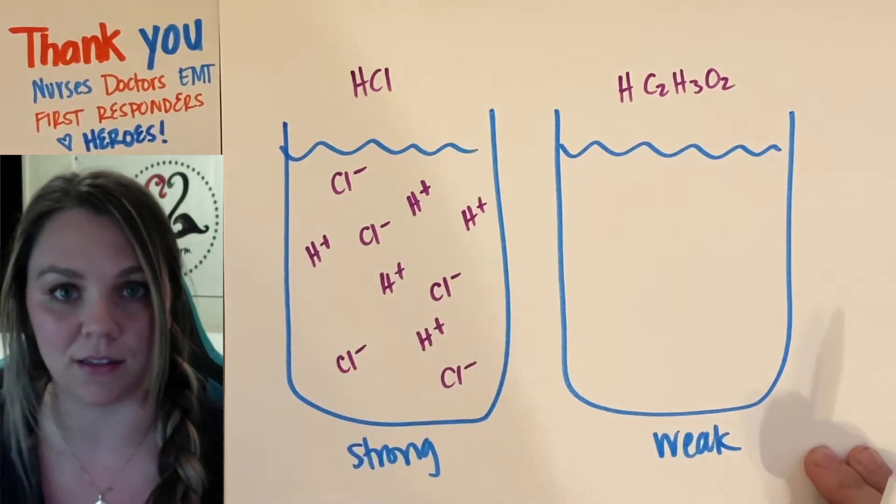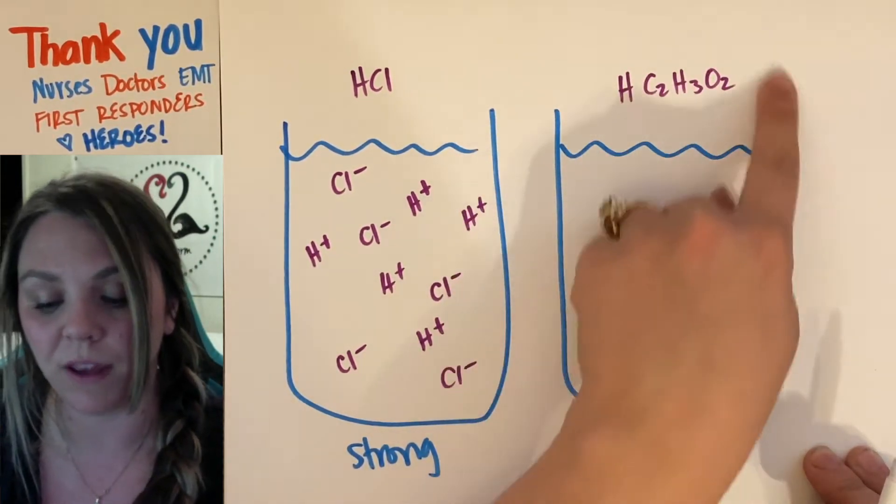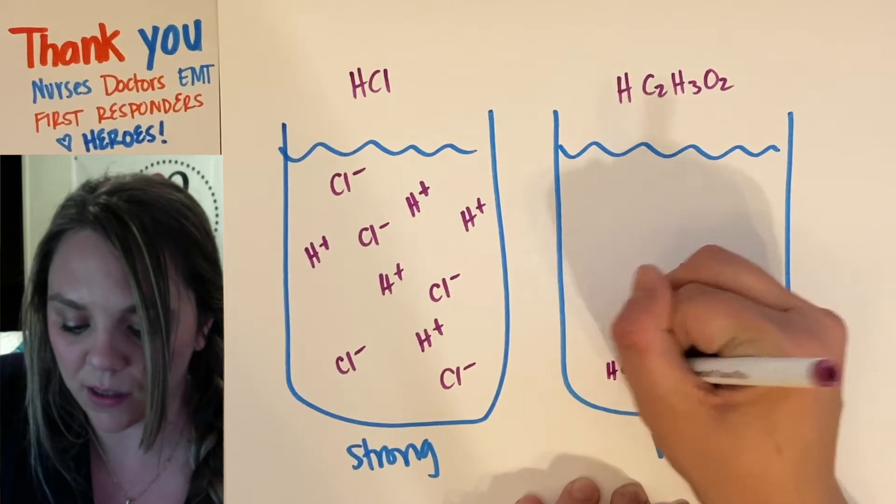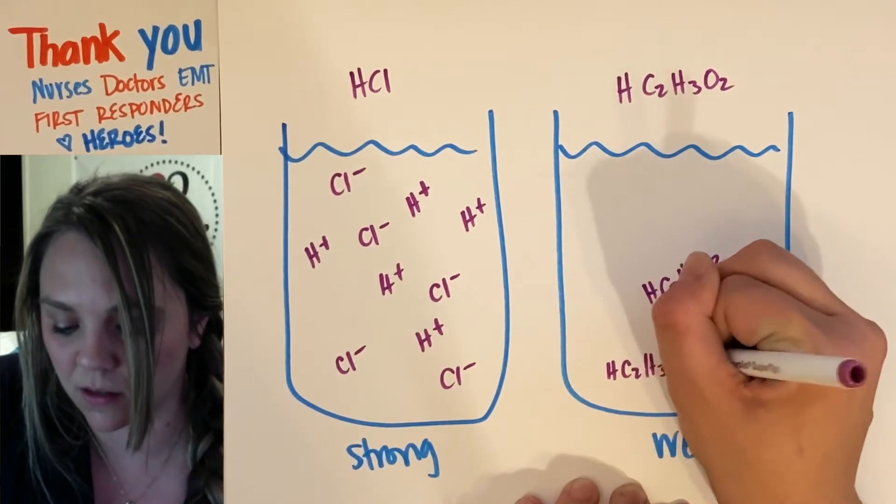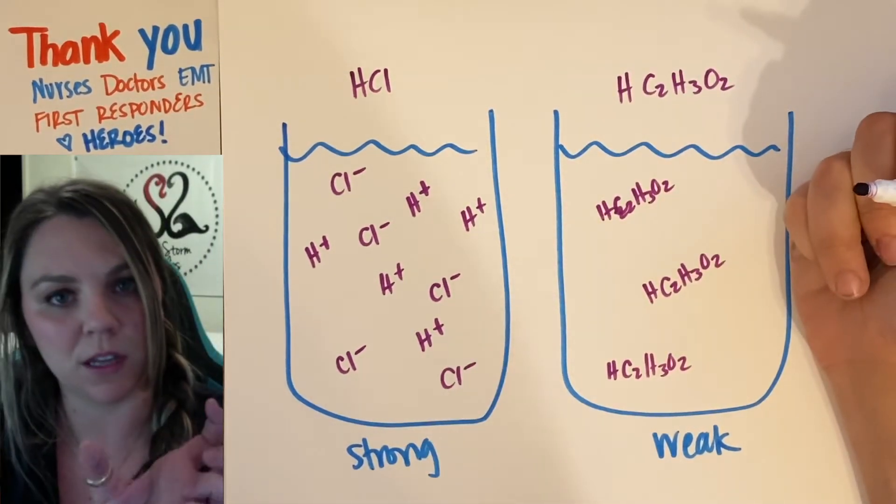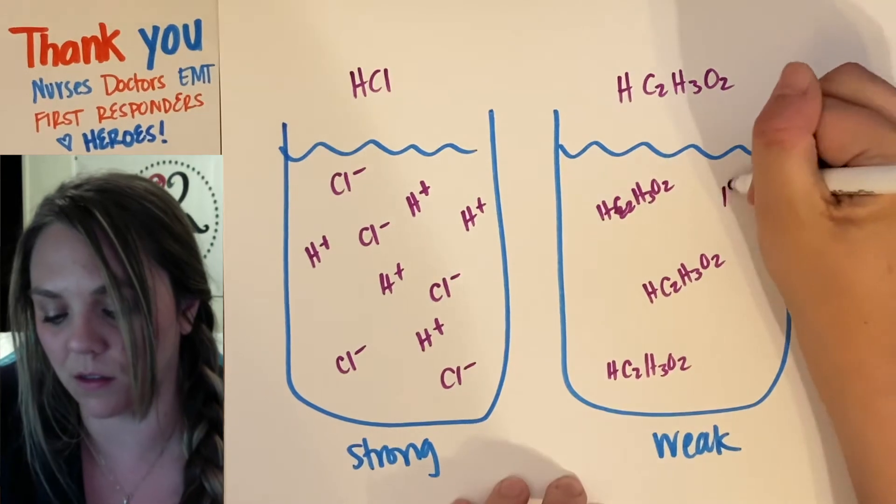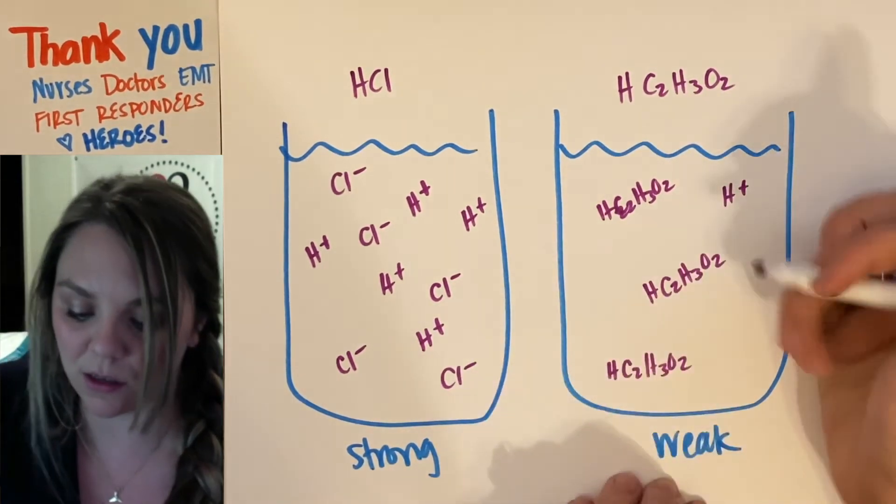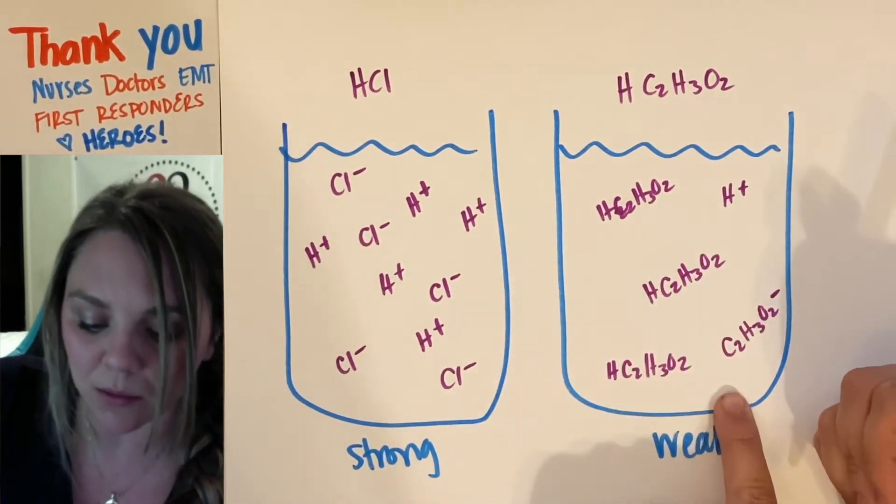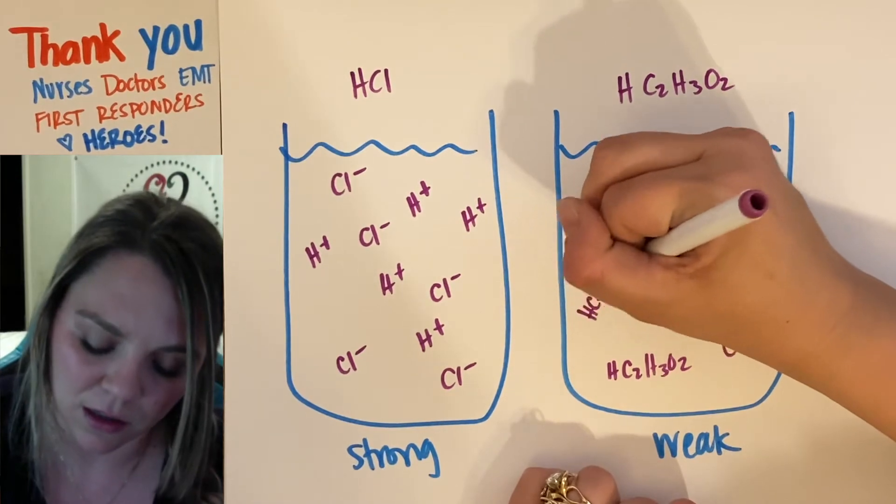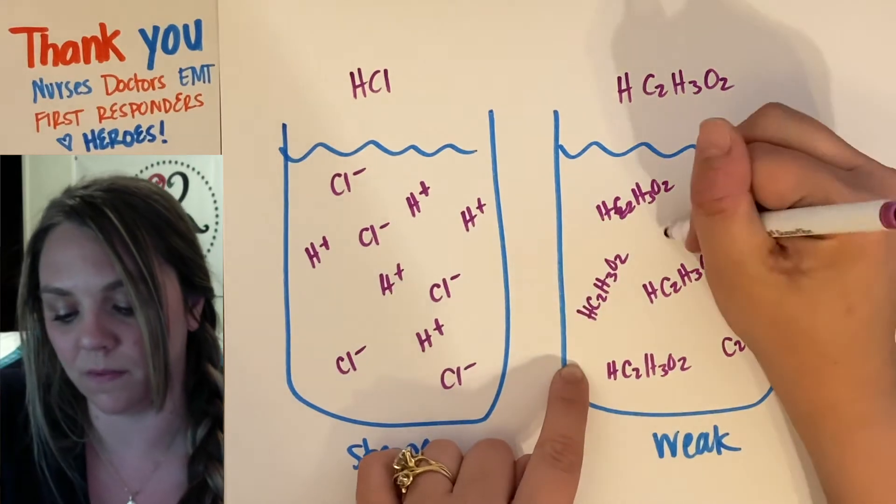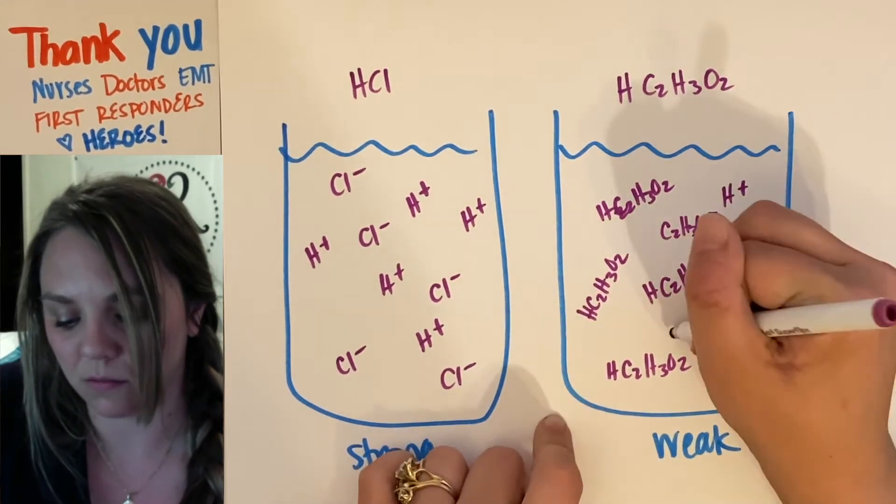However, weak acids will favor staying together as a molecule. So I'm going to get a lot of acetic acids, HC2H3O2, that are still just together as a molecule. I will get some that dissociate. So I'll get like an H plus here and an acetate ion here. So I do have some dissociation, but in general, they favor staying together as a molecule.